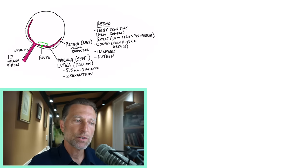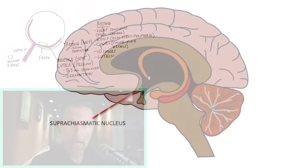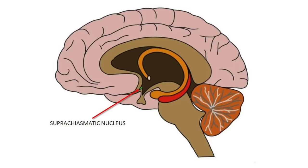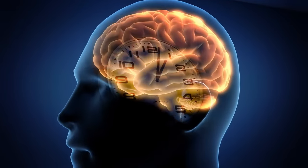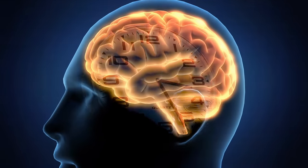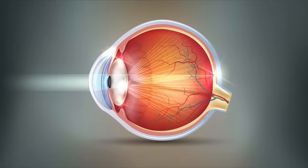These cells relay information to the internal clock, which is called the suprachiasmatic nucleus. That is your internal clock, and that clock is regulated by light and darkness via your eyeball.